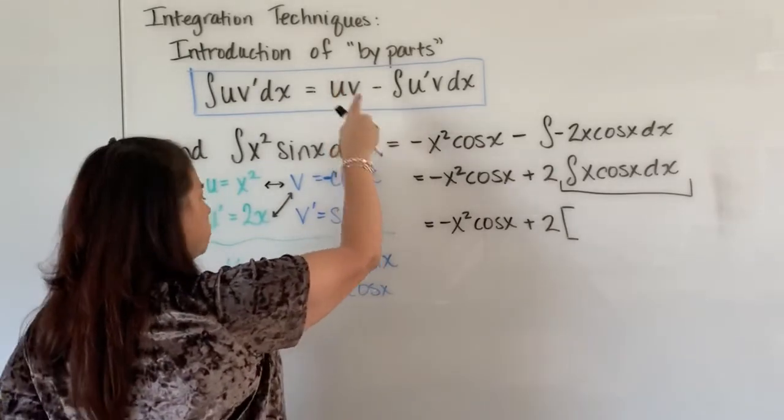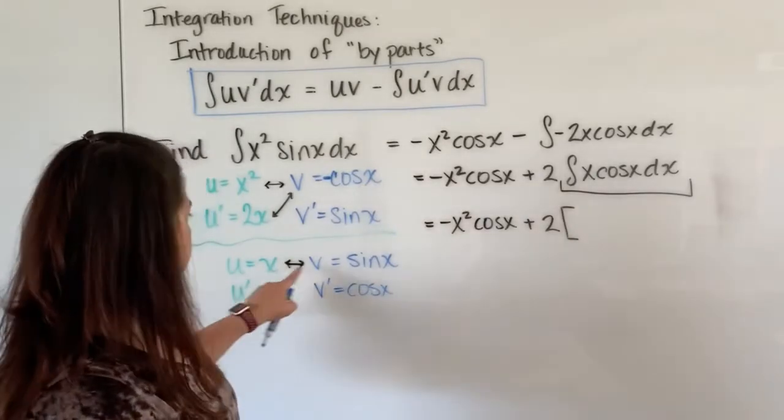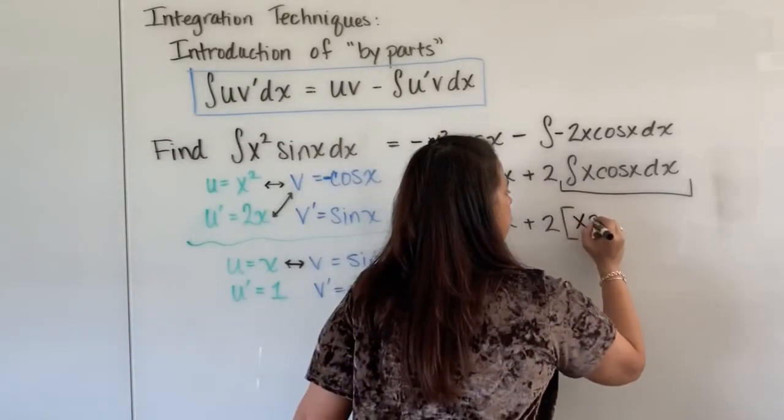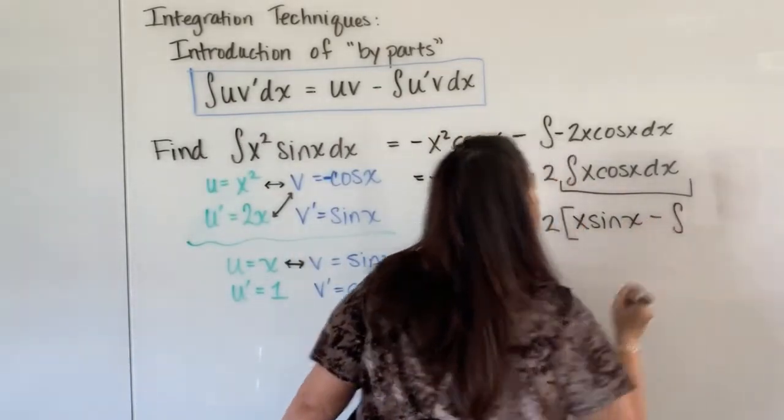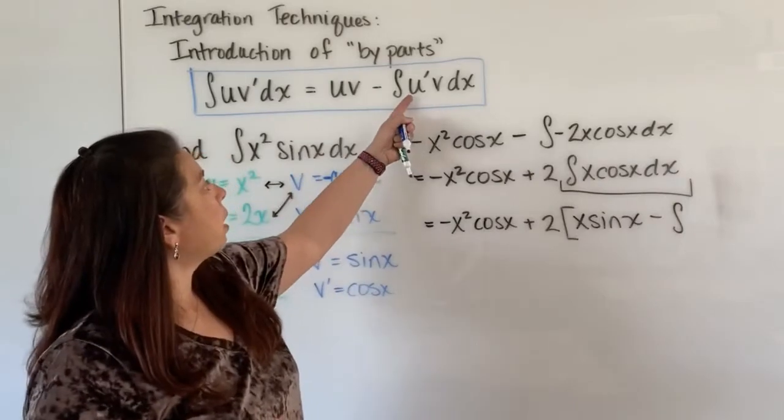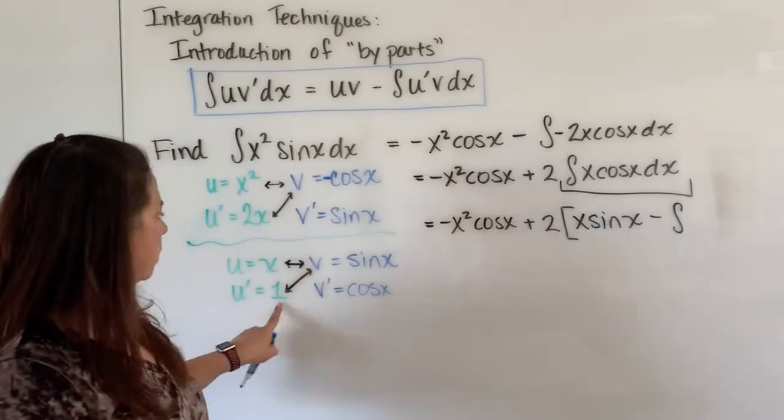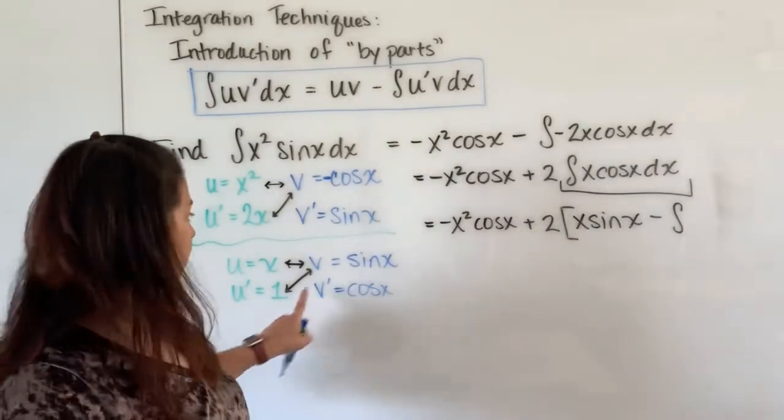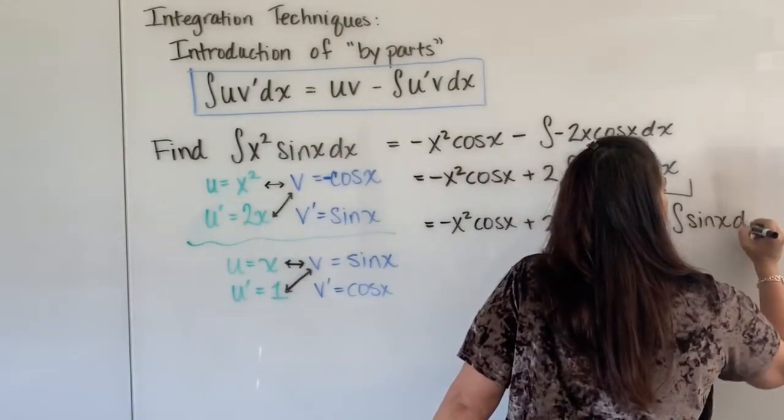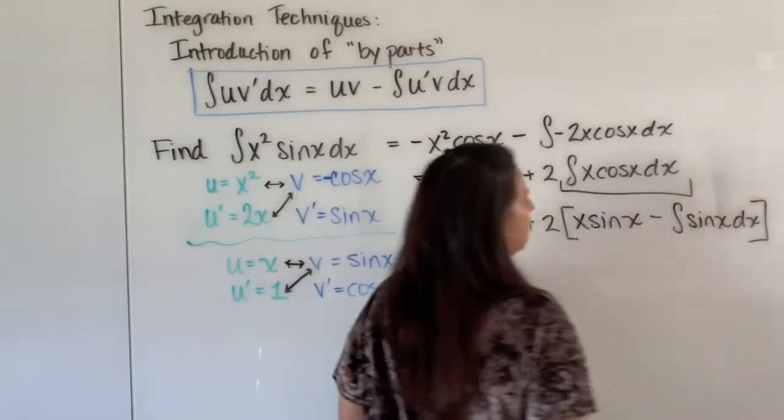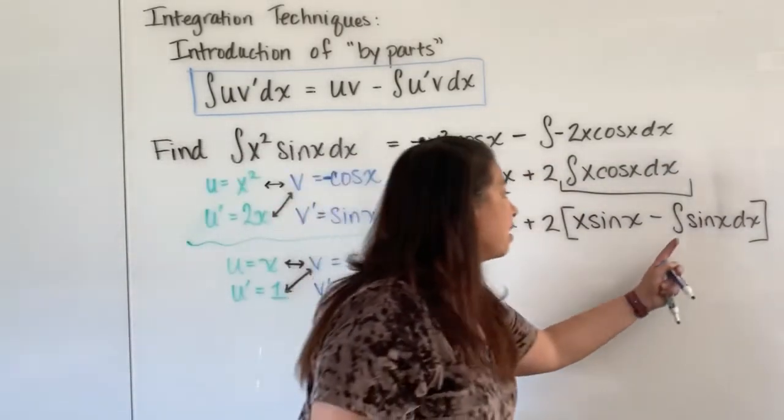And so I continue on with according to the by parts take my u and multiply that by the v so I have my x times my sine x so here's x sine x then minus the integral of u prime times v. Well that's u prime here times this v so one times sine x, that's why we love the one here because now we just literally have sine x as my integrand here.